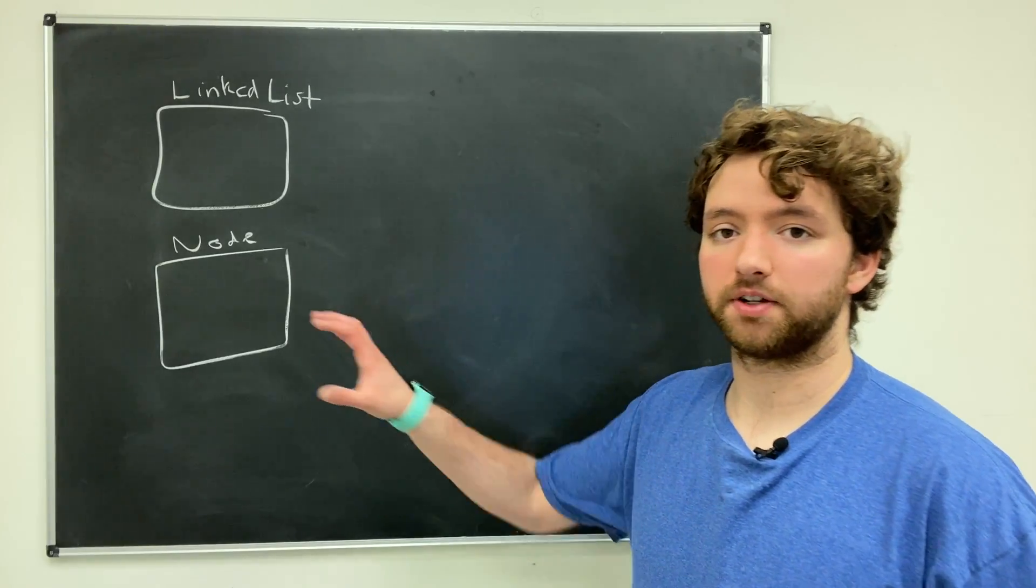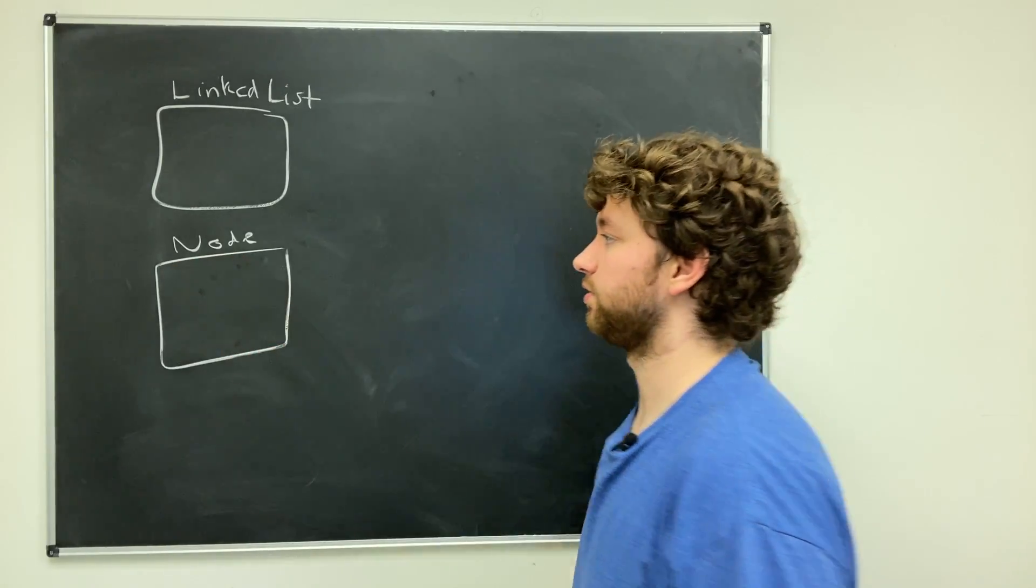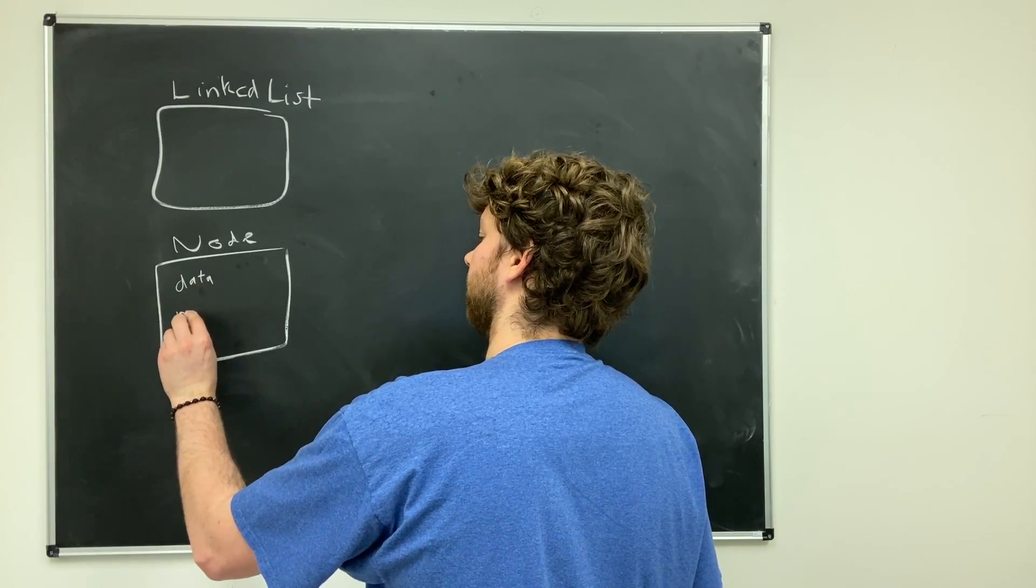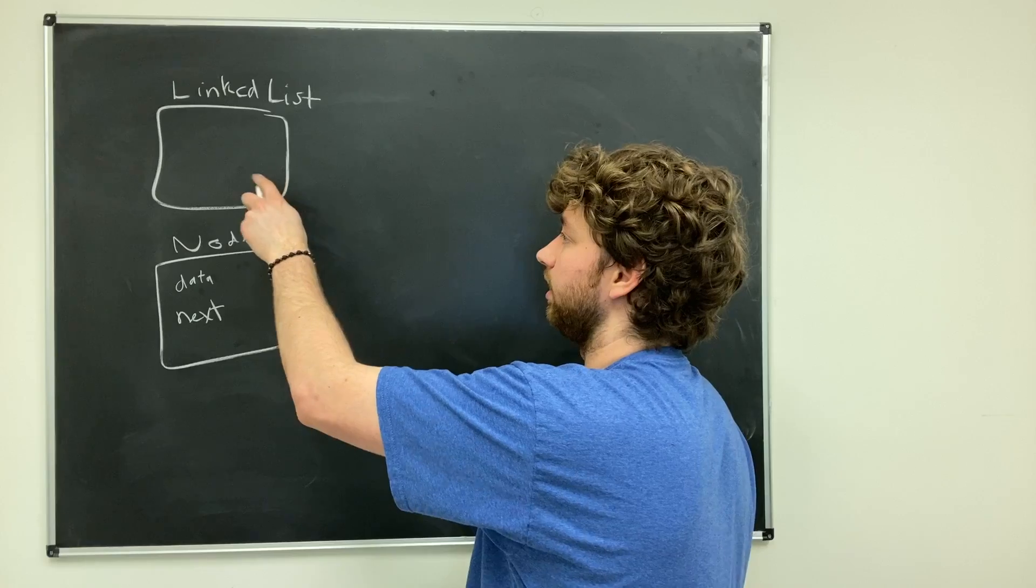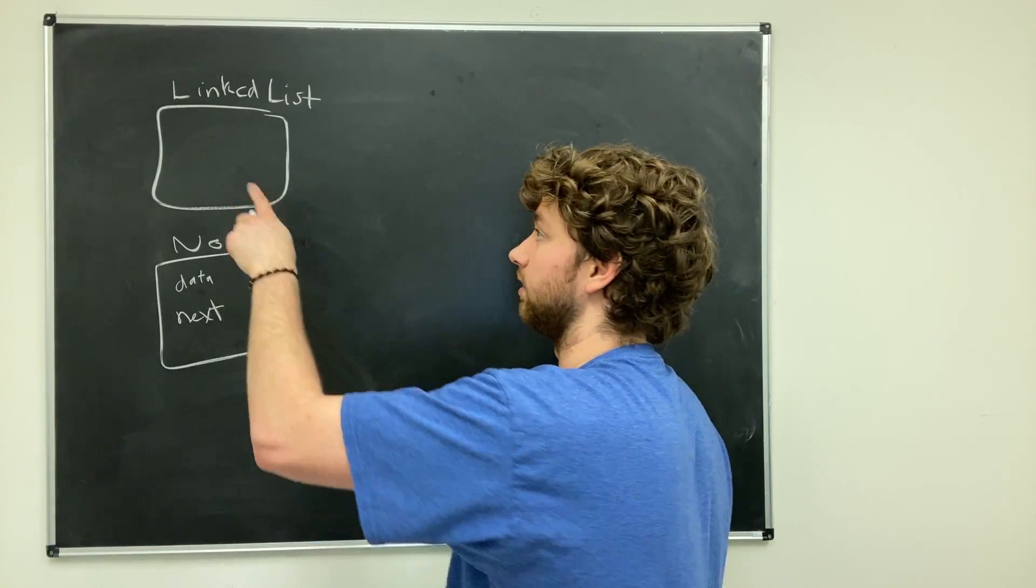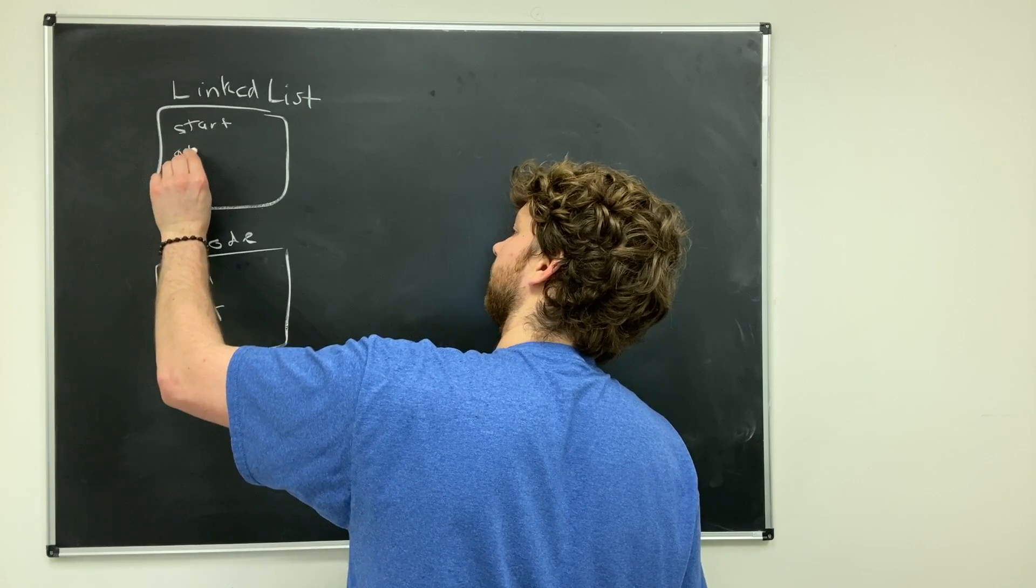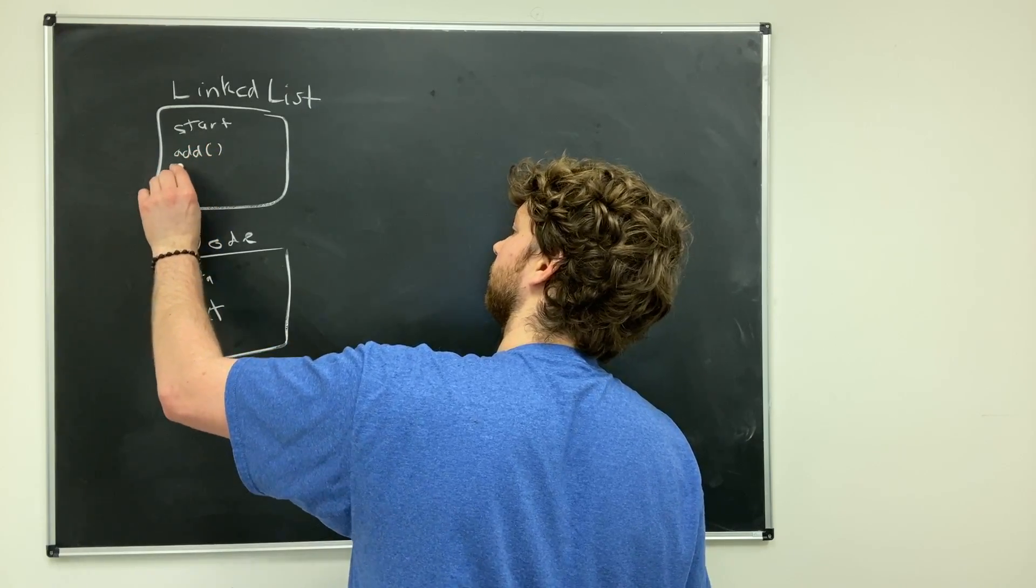Anything specific to one node would go here. So you're going to have the data and then probably the next pointer. And then anything specific to the entire linked list will go here, so you probably have a start, maybe some methods such as add or delete.